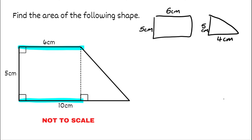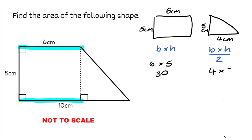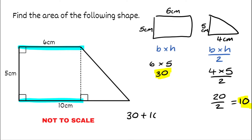Now all we need to do is find the areas of both shapes. For the rectangle I do base times height, and for the triangle I do base times height divided by two. The rectangle: six multiplied by five gives us 30. For the triangle: four multiplied by five is 20, divided by two gives us 10. Adding those together — 30 plus 10 — gives us 40 centimeters squared.